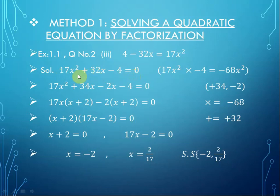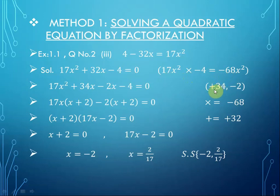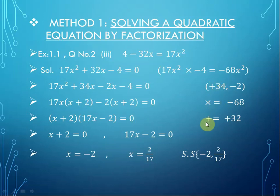For factorization we use the method of mid-breaking. We multiply the first term 17x² and the last term minus 4 with each other, and we get minus 68x². Now we find possible factors: plus 34 and minus 2. Multiplying these two factors gives minus 68, and adding them gives the coefficient of the middle term, 32.